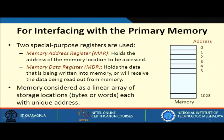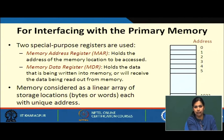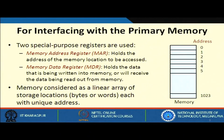They are called memory address register and memory buffer register. Memory address register holds the address of a memory location to be accessed — for reading an instruction, reading data, or writing back data. So memory address register holds the address of the instruction to be read, the data to be read from memory, or the data to be written into memory.